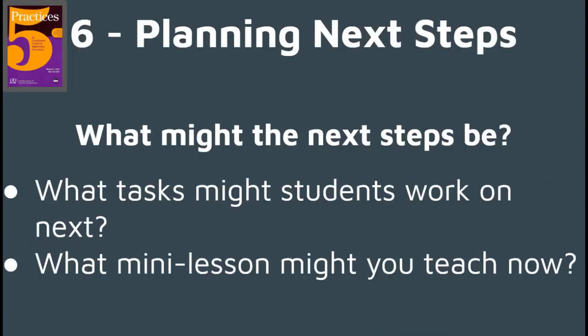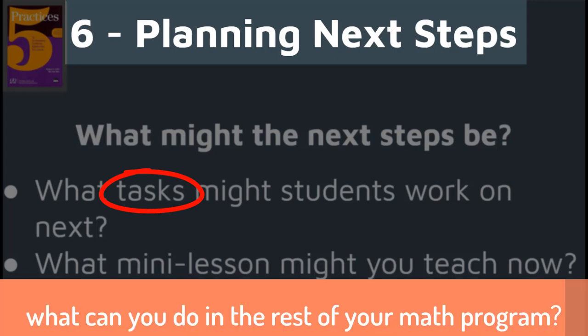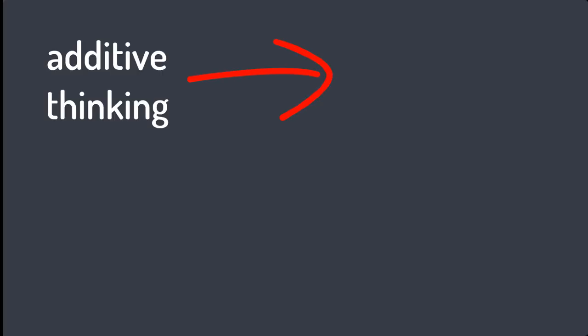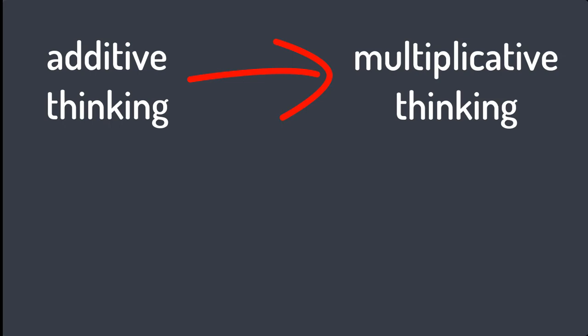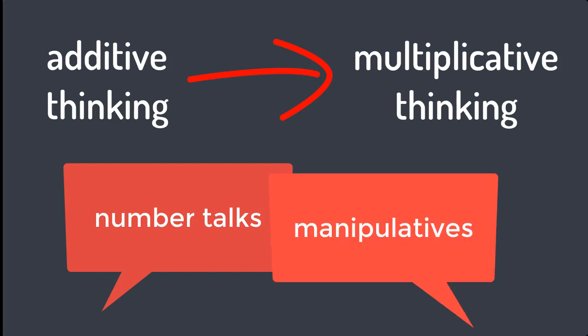Practice number six is using all this information to plan some next steps. We want to further the learning. You might need to intentionally choose some tasks that students are going to work on next, or you might need to do things in other parts of your program — maybe you're going to teach a mini lesson, maybe you're going to incorporate other activities. If we want our students to move from additive thinking to multiplicative thinking, there are a few different learning strategies that are going to help here: doing number talks about multiplication and using manipulatives to work on different models of multiplication.